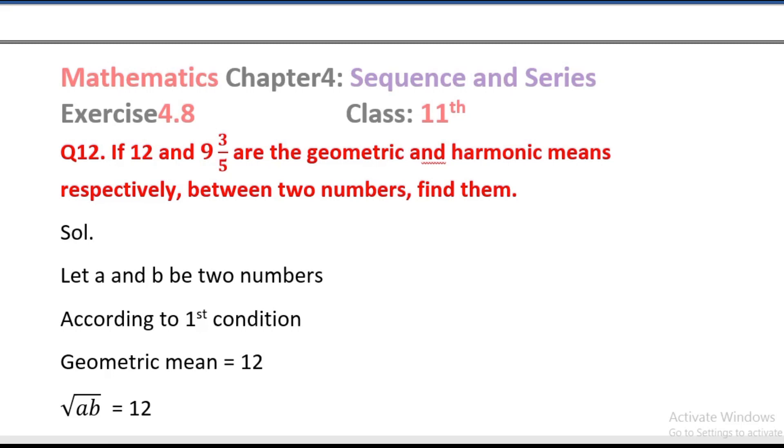So let's start. If 12 and 9 whole 3 divided by 5 are the geometric and harmonic means respectively between two numbers, find them.